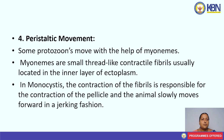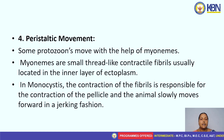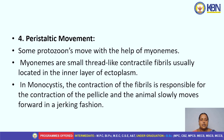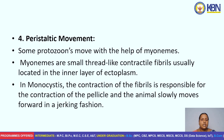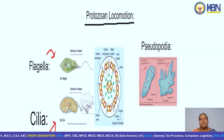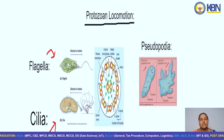Fourth, peristaltic movement. Some protozoans move with the help of myonemes. Myonemes are small, thread-like contractile fibrils usually located in the inner layer of ectoplasm. In Monocystis, the contraction of the fibrils is responsible for the contraction of the pellicle and the animal slowly moves forward in a jerking fashion. Here we have some pictures related to protozoan locomotion.